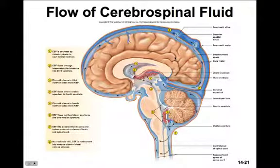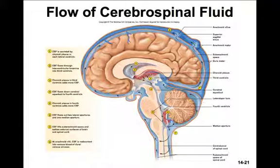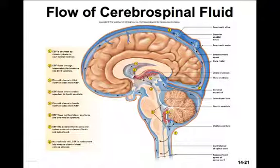This diagram shows us the production and flow of cerebrospinal fluid. It can be secreted by the choroid plexus or general ependymal linings, and it will flow through the interventricular foramina into the third ventricle. In the third ventricle, the choroid plexus will add more cerebrospinal fluid, and it will flow down through the cerebral aqueduct into the fourth ventricle, located beneath the cerebellum. The choroid plexus in the fourth ventricle adds yet more cerebrospinal fluid, and then it will flow out through two lateral apertures and one median aperture to fill the subarachnoid space and bathe the brain and spinal cord. At the arachnoid villi, cerebrospinal fluid is reabsorbed into the venous blood supply of the dural sinuses.